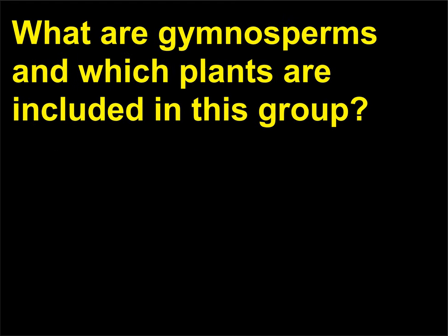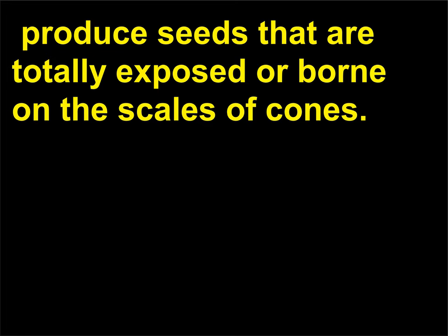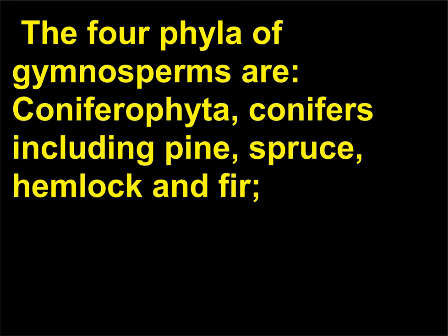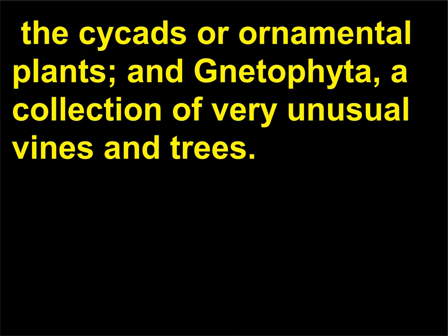What are gymnosperms and which plants are included in this group? Gymnosperms, from the Greek terms gymnos (meaning naked) and sperma (meaning seed), produce seeds that are totally exposed or born on the scales of cones. The four phyla of gymnosperms are: Coniferophyta (conifers including pine, spruce, hemlock, and fir); Ginkophyta (consisting of one species, the ginkgo or maidenhair tree); Cycadophyta (the cycads, or ornamental plants); and Gnetophyta (a collection of very unusual vines and trees).